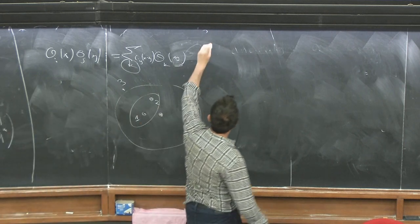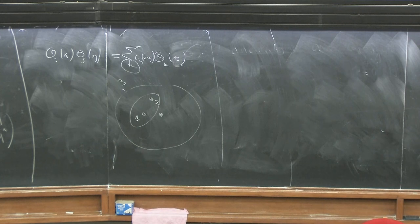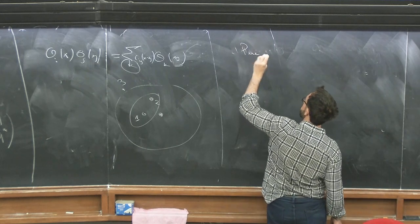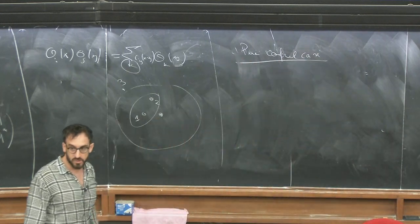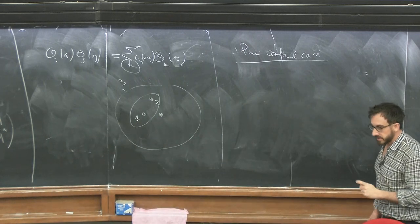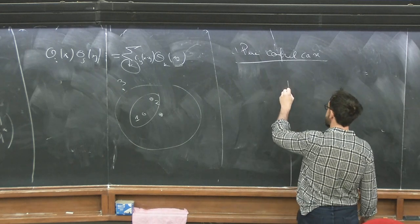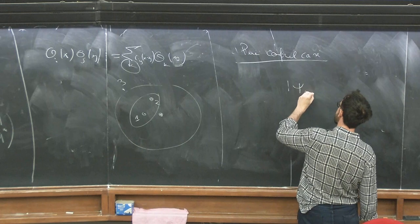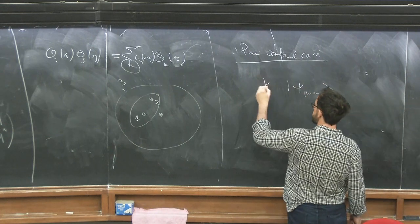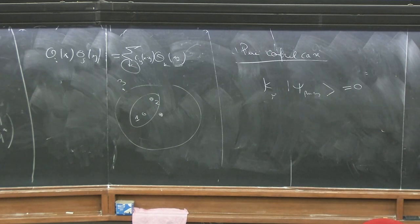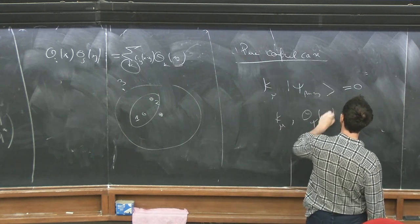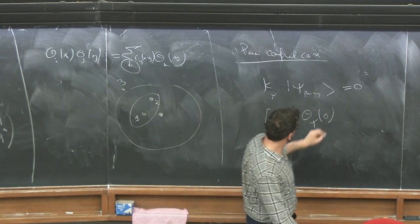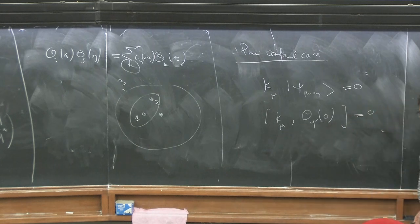We want to make use as much as possible of the symmetries of the problem. Let's start with the pure conformal case. In the discussion section I already quickly sketched how the representation theory works. I phrased the discussion at the level of states, and asserted that the primary state is by definition a state annihilated by the special conformal generators.